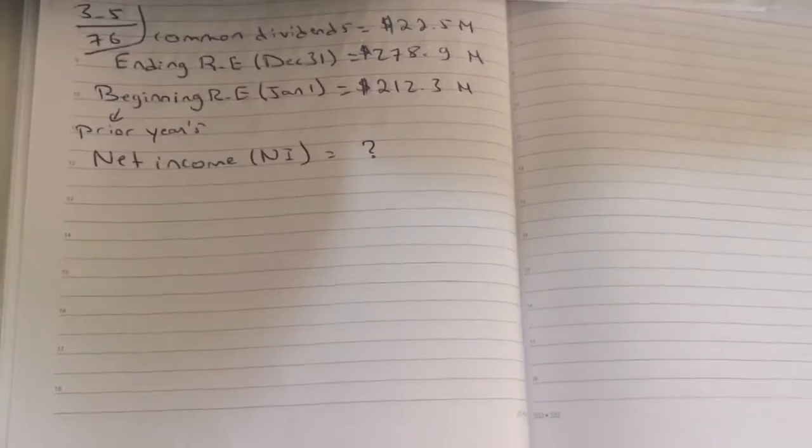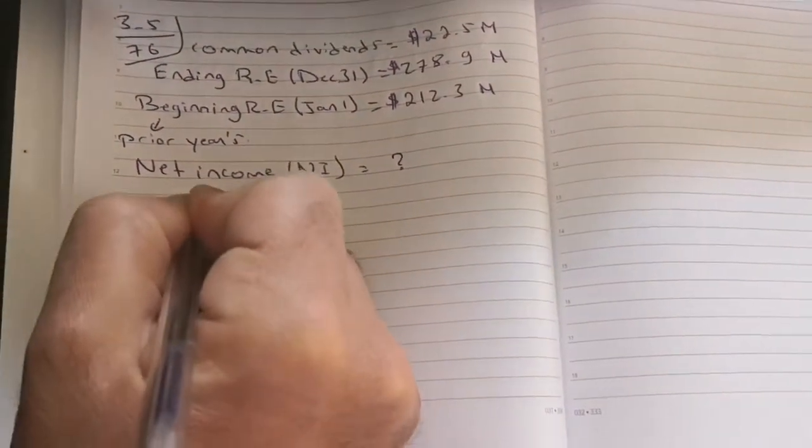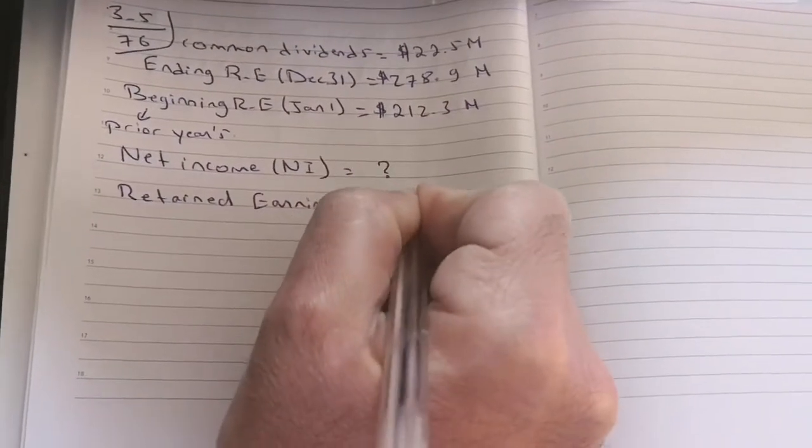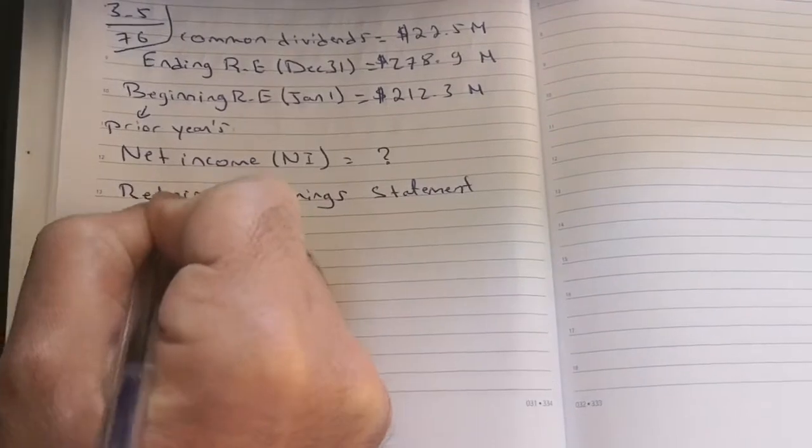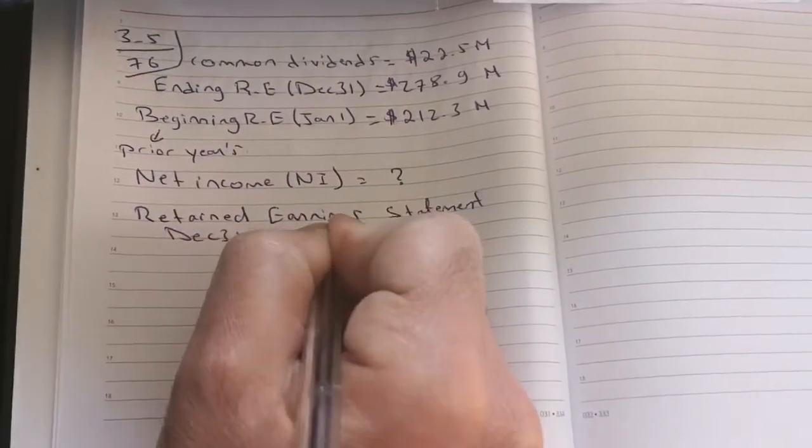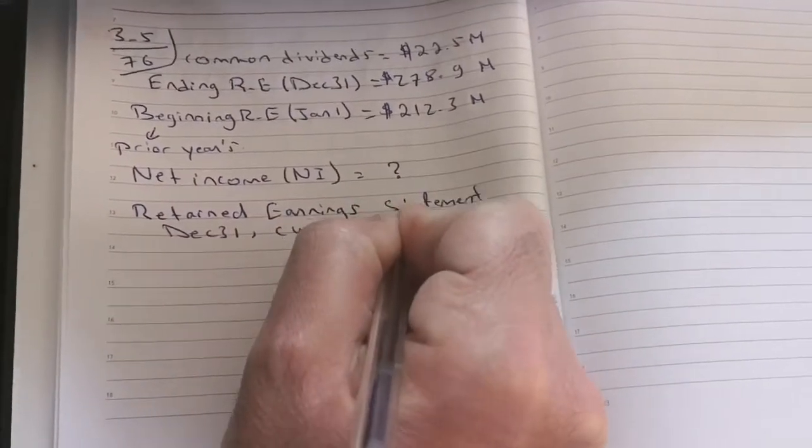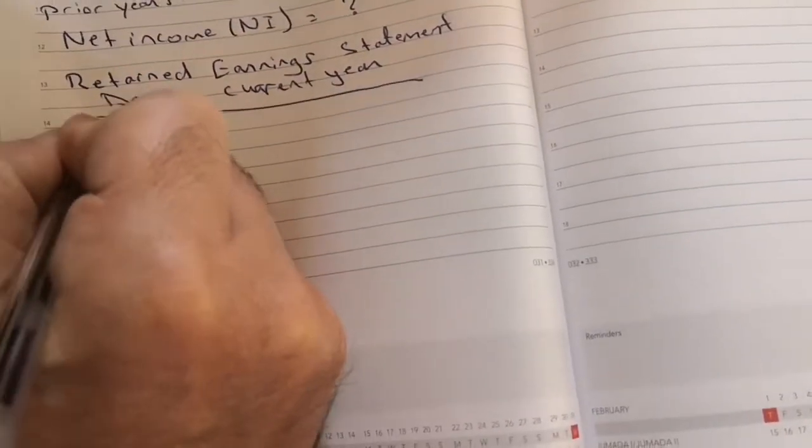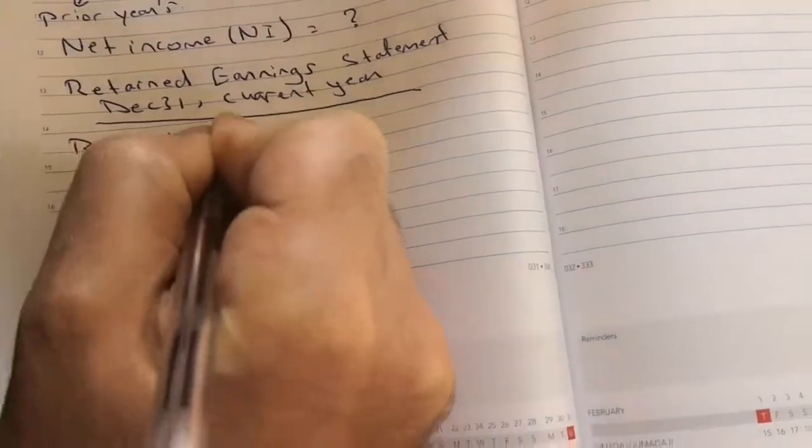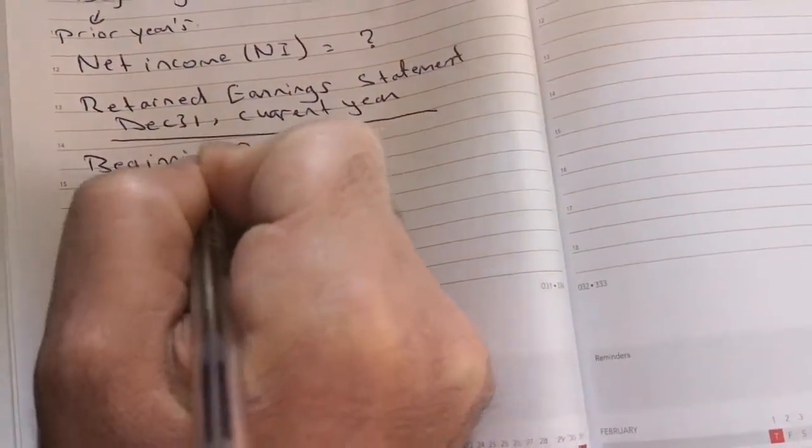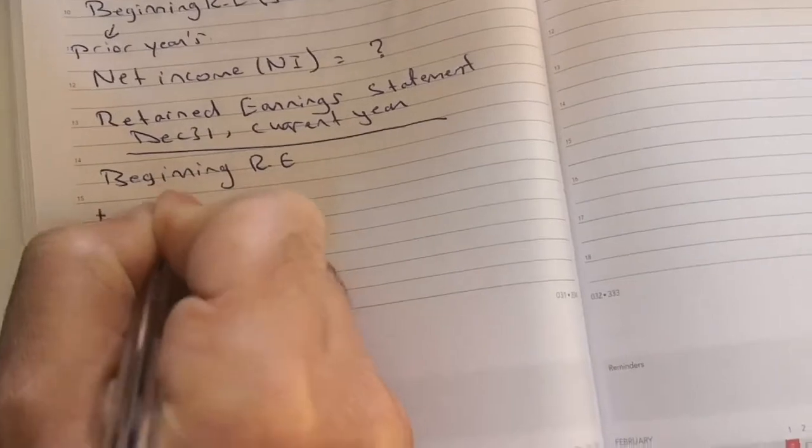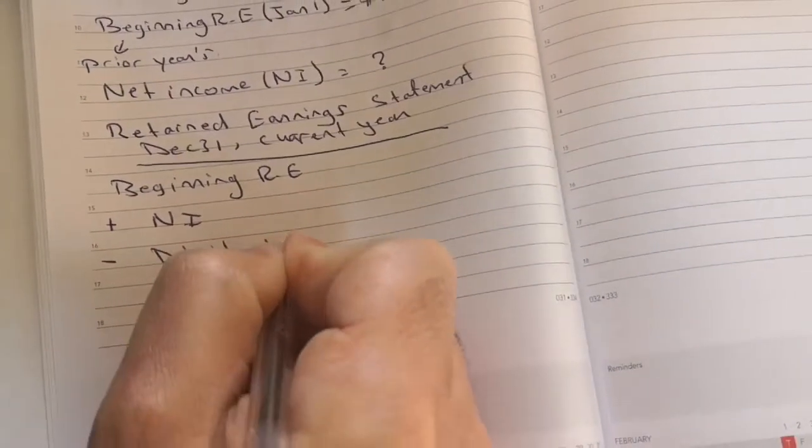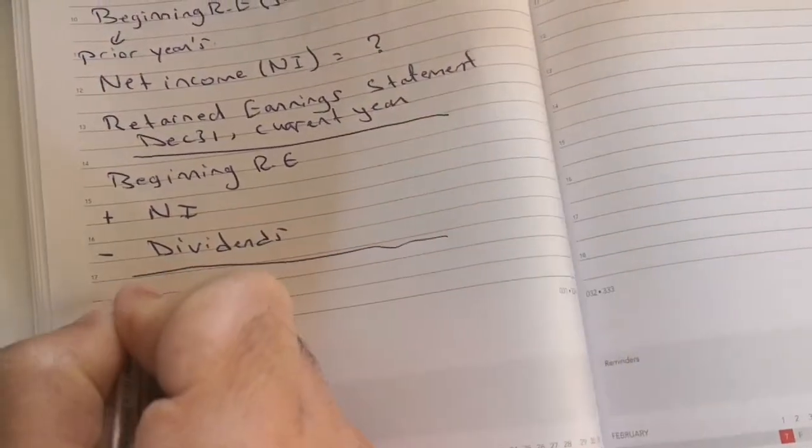So here, since we are talking about retained earnings, dividends, compute net income, we'll solve it through the retained earnings statement. The retained earnings statement: beginning retained earnings, add net income as we said we abbreviate it by NI, deduct dividends, the result is ending retained earnings.